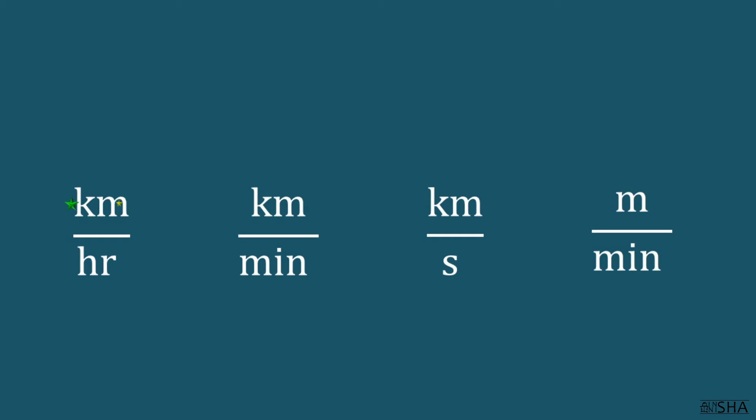Therefore, when converting, the given number must be multiplied by a fraction. Units of length are converted in its numerator and units of time in its denominator.